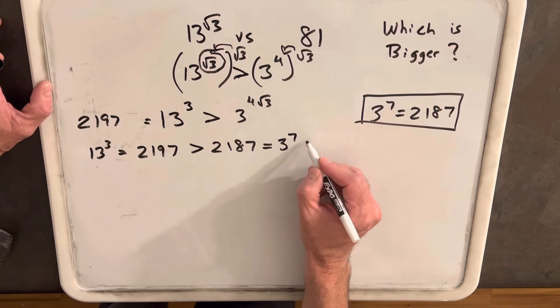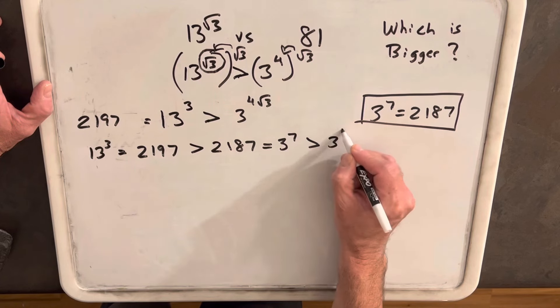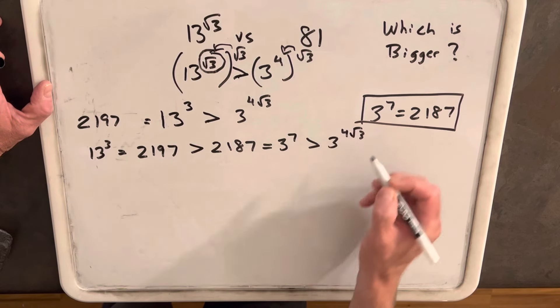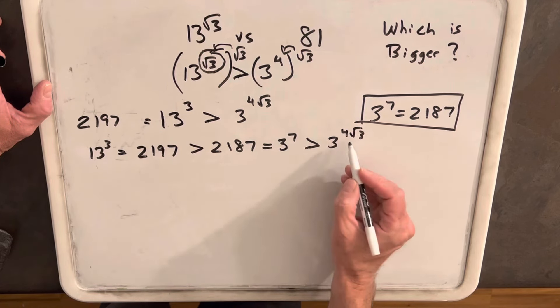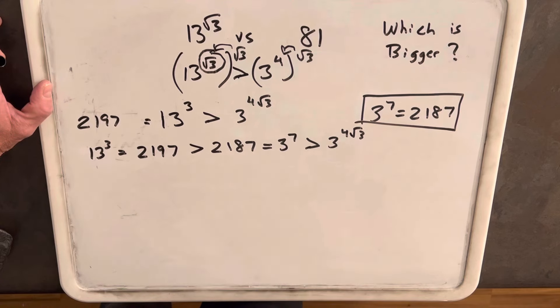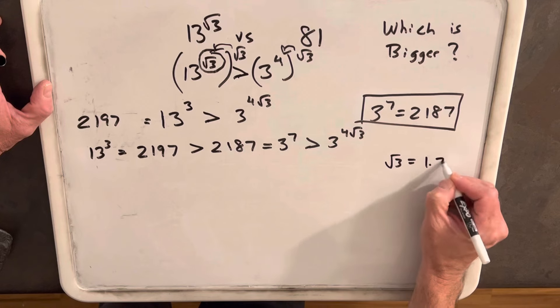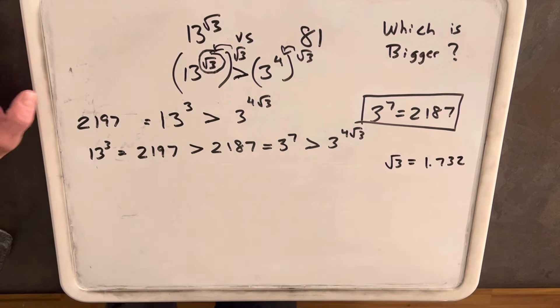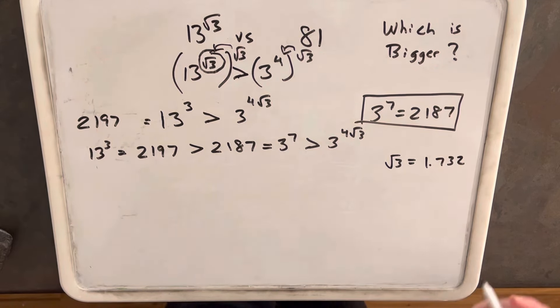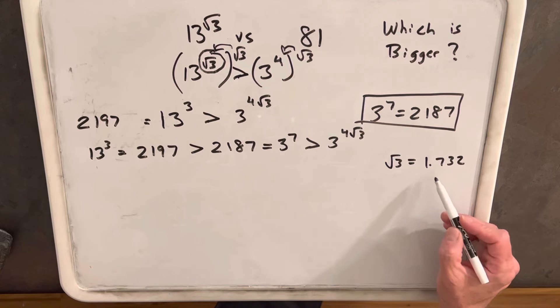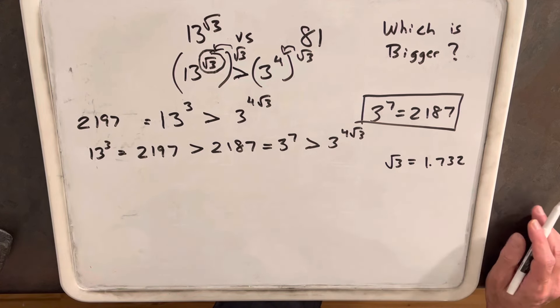Now, this whole thing is going to work as long as 3 to the 4 square root of 3 is less than 3 to the 7th. And that's a little hard to know just looking at it. I know square root of 3 is approximately 1.732. So it looks pretty close, right?